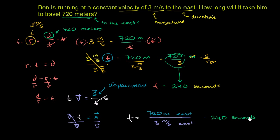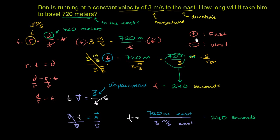One note: in these problems I've been making vector quantities by saying 'to the east' or 'going north.' In more complex problems, you define a convention — for example, positive means moving east and negative means moving west. So 720 meters east becomes positive 720 meters, and 3 meters per second east becomes positive 3 meters per second. We'll explore this more in future videos, including when dealing in two or three dimensions.